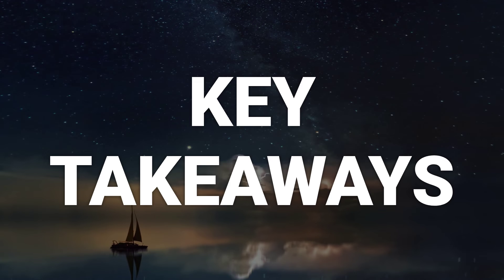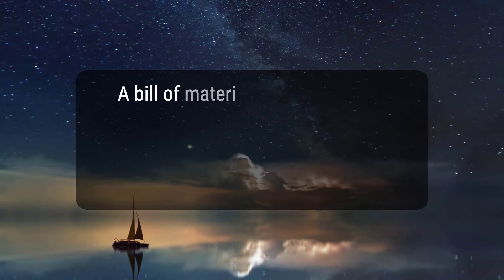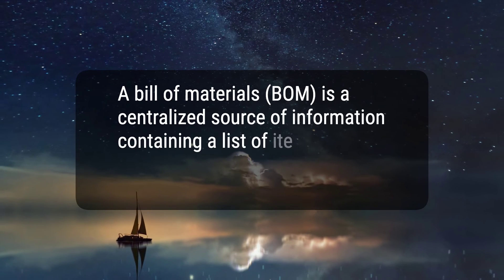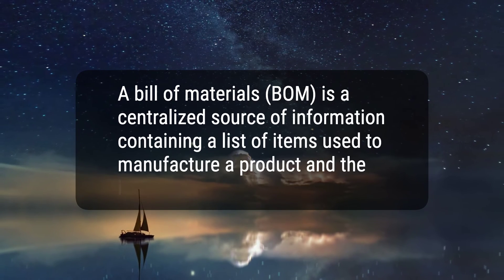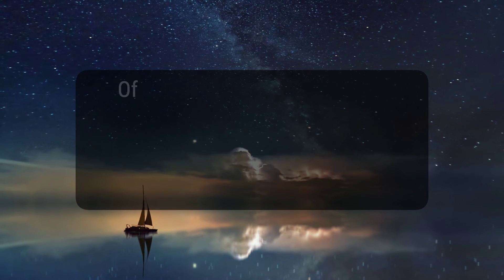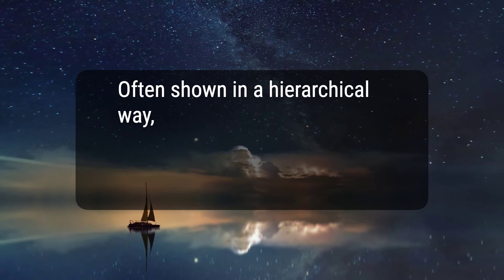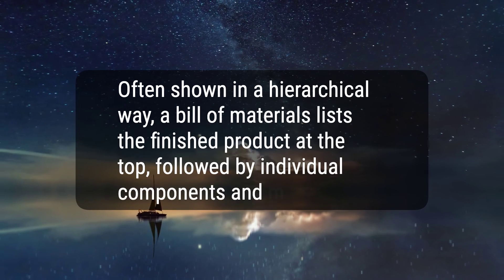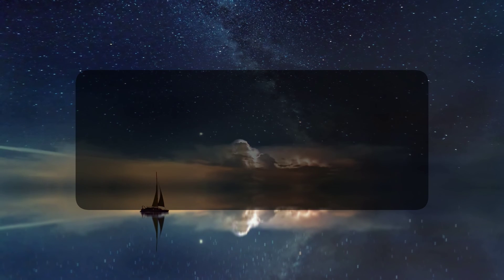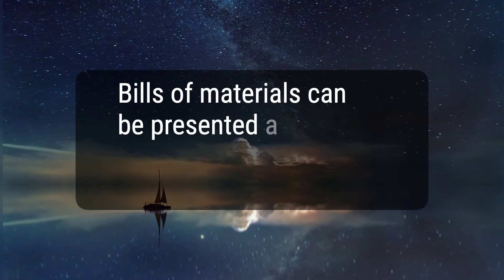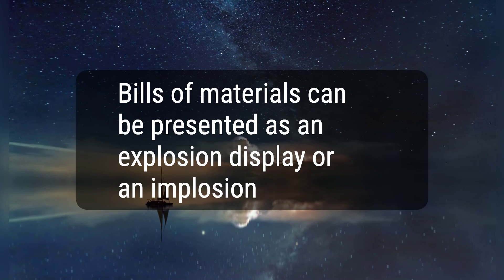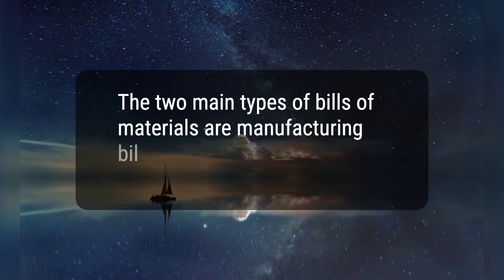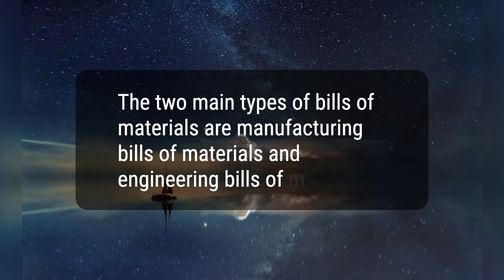Here are four key takeaways. 1. A Bill of Materials, BOM, is a centralized source of information containing a list of items used to manufacture a product and the instructions on how to do so. 2. Often shown in a hierarchical way, a Bill of Materials lists the finished product at the top, followed by individual components and materials. 3. Bills of Materials can be presented as an explosion display or an implosion display. 4. The two main types of Bills of Materials are Manufacturing Bills of Materials and Engineering Bills of Materials.